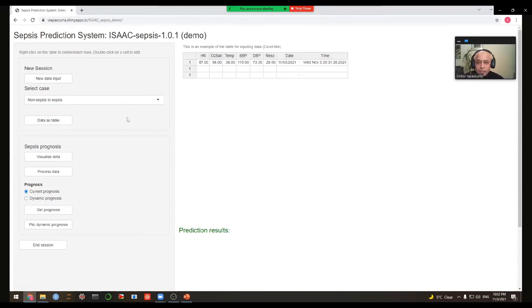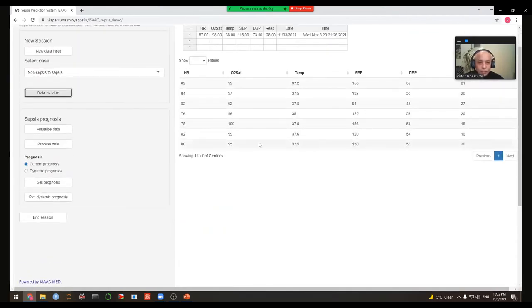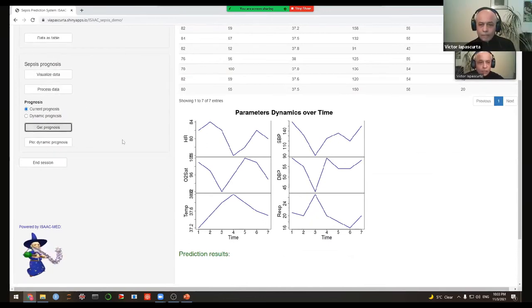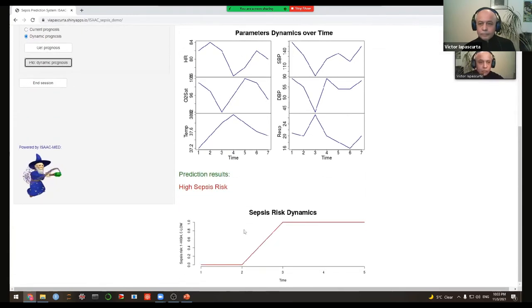But what else we can do with this application? Here we have a list of pre-selected cases, and I will be using one of them, it's a real patient. And we can display the data of this patient where the columns are for parameters and the rows denoting all the observations. We also can visualize this data as plots, and you can see that our patient is for seven hours already in the intensive care unit. And finally we can process the data and get prognosis. For this, the prognosis will be for the last observation, and in this case is a high sepsis risk.